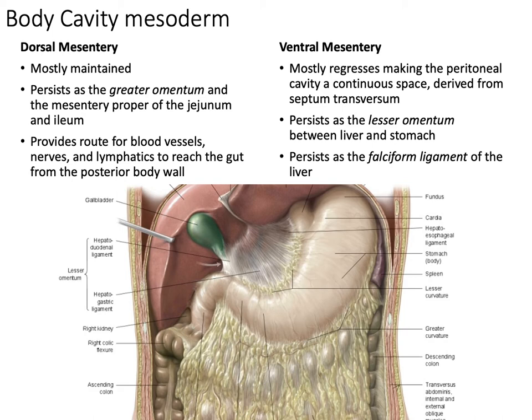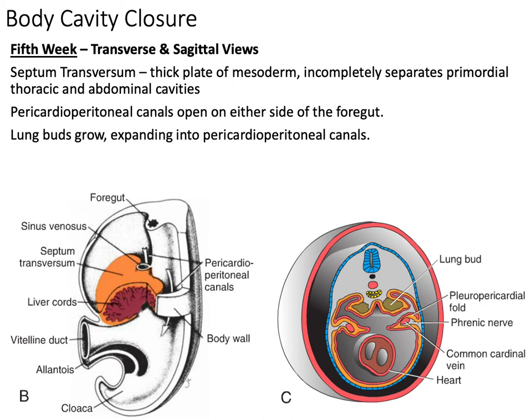Our ventral mesentery goes on to be the lesser omentum. Intuitively, while the greater omentum is the big fatty layer, the lesser omentum sits between the lesser curvature of the stomach and attaches to the liver. It goes on to become the falciform ligament of the liver — that ligament between the two lobes of the liver — which is definitely smaller but provides an attachment from the stomach to the liver.